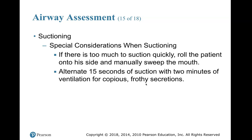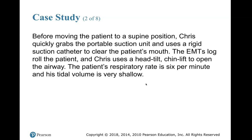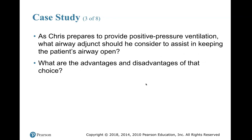Back to the case study: before moving the patient to a supine position, Chris grabs the portable suction unit and uses a rigid suction catheter to clear the patient's mouth. The EMTs log-roll the patient and Chris uses a head tilt-chin lift to open the airway. The patient's respiratory rate is six per minute with very shallow tidal volume. As Chris prepares to provide positive pressure ventilation, what airway adjunct should he consider to help keep the patient's airway open, and what are the advantages and disadvantages of that choice?